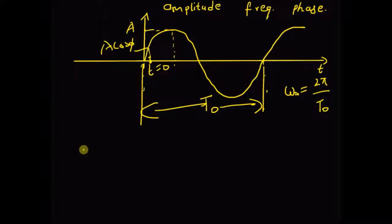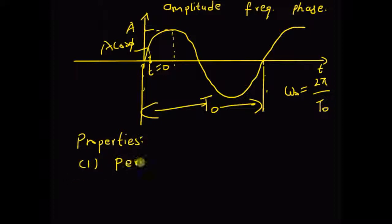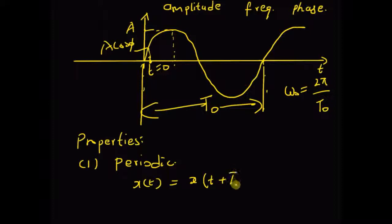Now let us look at the properties of this sinusoidal signal. The first property is periodicity — a sinusoidal signal is a periodic signal. That is, x(t) is equal to x(t + T-naught), where T-naught is the fundamental period.